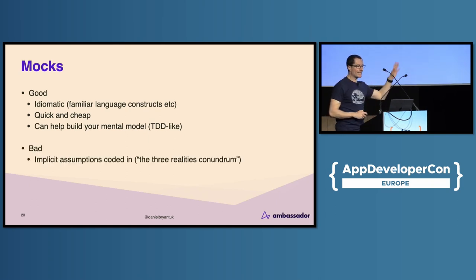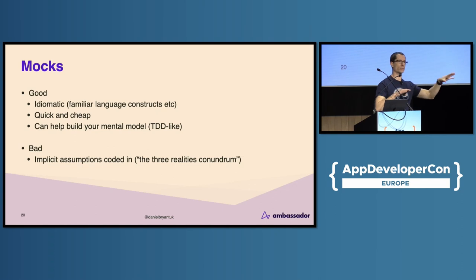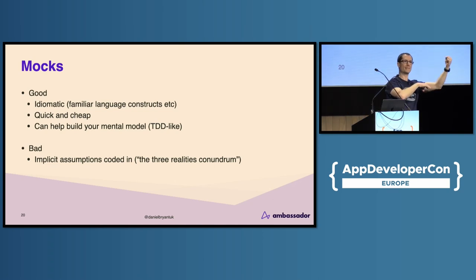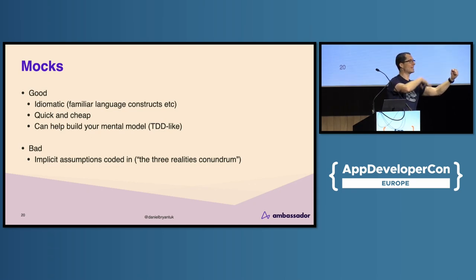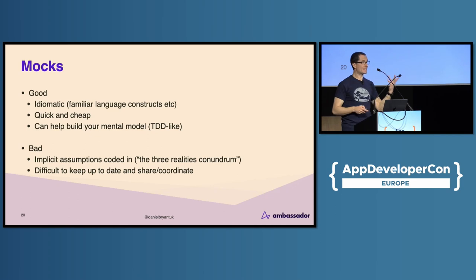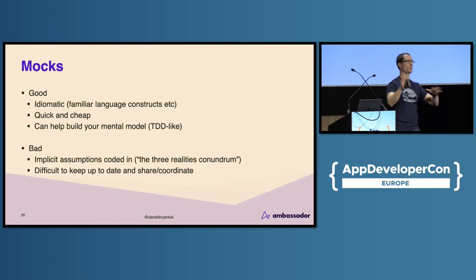The bad: there are implicit assumptions coded in. I call this the three realities conundrum. Everything works fine locally, tests pass, you push to production, something falls over — because the mocks have drifted away from the actual implementation. There's always a real world we're modeling, there's always your code, and as soon as you've got a mock in the mix there are three realities. If they get out of sync, you get confidence locally but stuff falls over in production. You'll also see difficulty keeping mocks up to date and coordinating — I worked on a Ruby on Rails project where shared mocks became highly coupled and just became a nightmare.